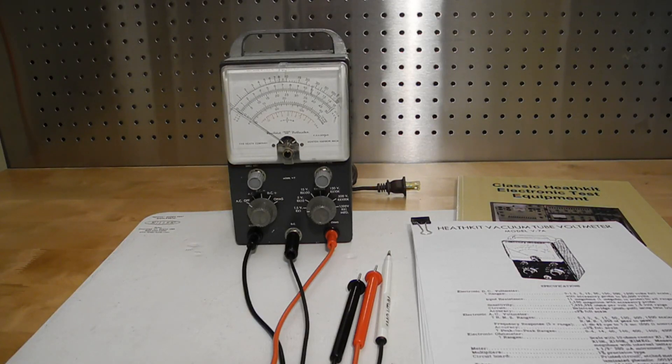This is a short video about a Heathkit V7 vacuum tube voltmeter that I recently acquired. The V7 was the seventh in a long line of Heathkit VTVM models that started with the V1 in 1947 and continued with models up until the late 1980s.